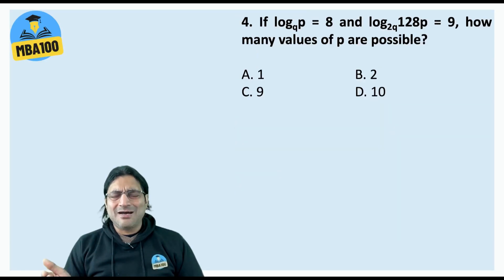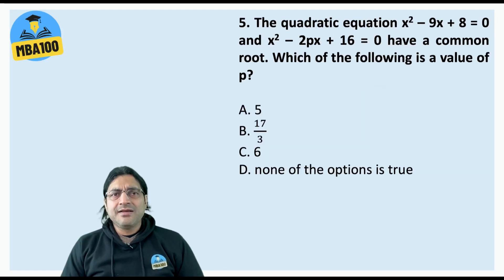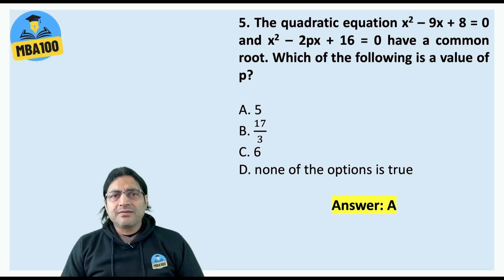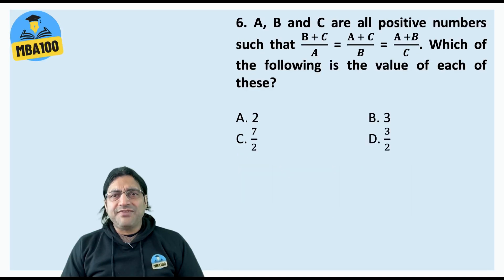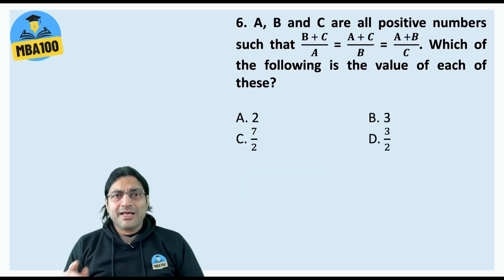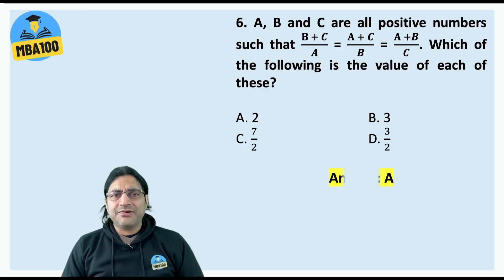Here I am sure everyone got it right — the answer is A. Here the answer is again A. P is 5. Here I am sure everyone got it right, though there can be a technicality relating to this question but we would not discuss that here. The answer is A.